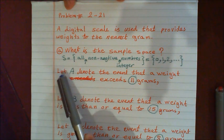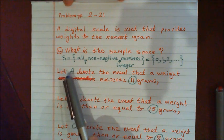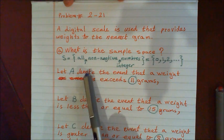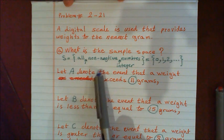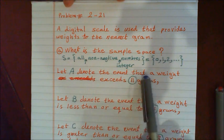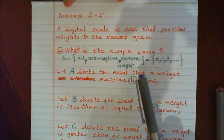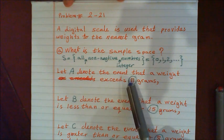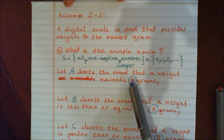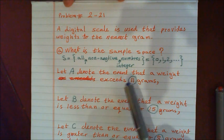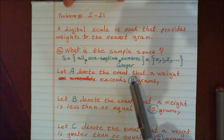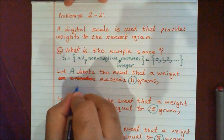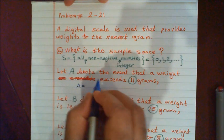Now let's describe the first event, which is event A. It says: let A denote the event that a weight exceeds 11 grams. So it's exceeding 11, meaning 11 is not included. Since it says 'exceeds,' A is equal to...